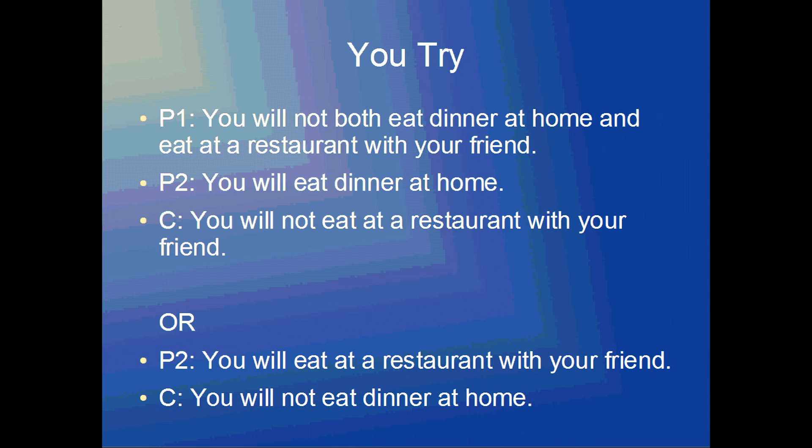Here is an example for you to do on your own. You want to convert this to both a conditional syllogism and a disjunctive syllogism. Just like in the previous examples, in the first case you want to confirm one of the possibilities, and in the second case you want to confirm the other possibility, then find out the conclusion in both cases. I'll give you a moment to work on that. If you need more time, you can pause the video; otherwise, I will move on to the answers.